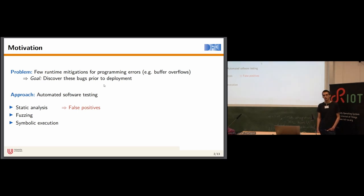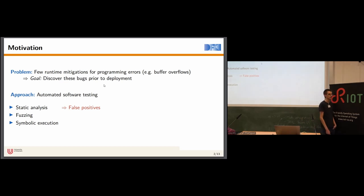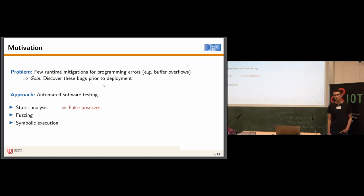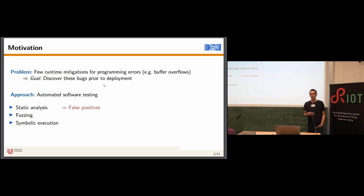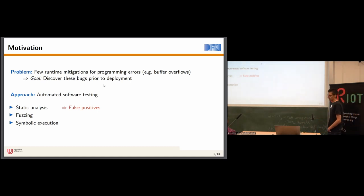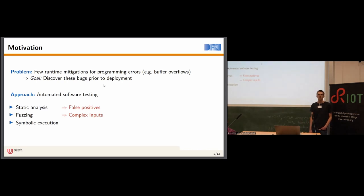A different technique which has gained traction over the past few years is fuzzing — a dynamic testing technique, meaning it actually executes the tested software. Fuzzing executes the program with randomly generated input values. The idea is that the program should handle any arbitrary input, and the fuzzer checks if it crashes or exhibits any unintended behavior. However, the problem with fuzzing is it doesn't perform formal reasoning and relies on random input generation, making it often incapable of satisfying complex input constraints.